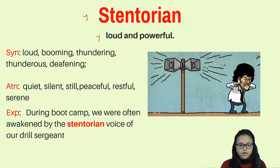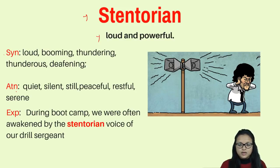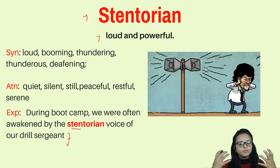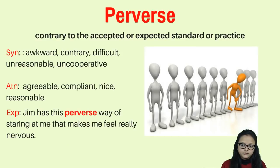Synonyms for stentorian are loud, booming, thundering, thunderous, and deafening — meaning it makes you deaf. Antonyms are very quiet, silent, still, peaceful, and serene — meaning there is no noise. Example: during boot camp, we were often awakened by the stentorian voice of our drill sergeant.